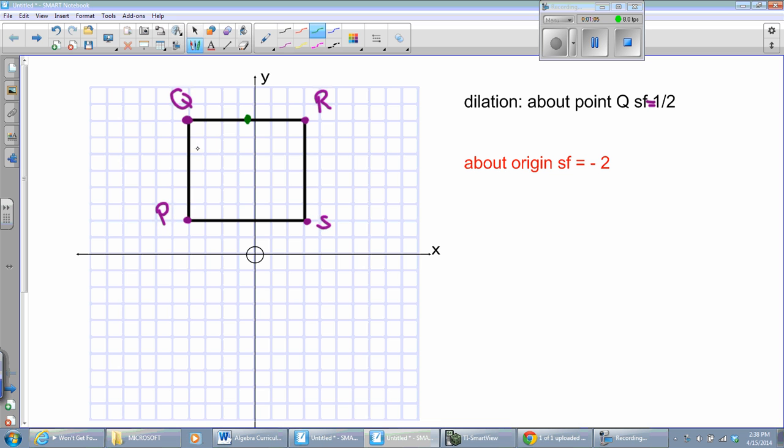So, QP is one, two, three, four, five, six. One, two, three. There's the new P, so we'll call it P-prime. We'll call this R-prime, not Q-prime, sorry, R-prime. And then S-prime will be at their intersection right there.